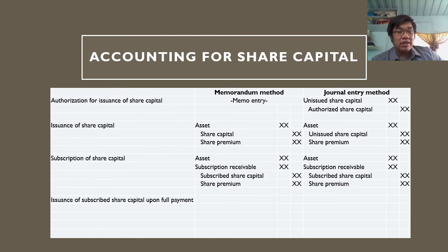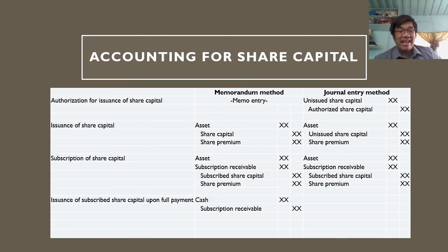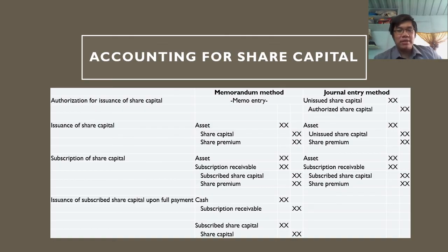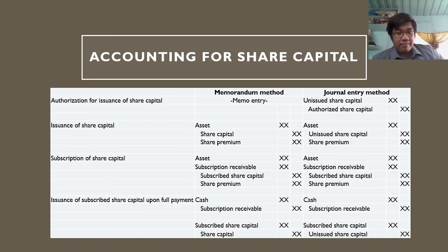The fourth transaction is issuance of subscribed share capital upon full payment. Once the subscriber has paid in full, they are entitled to their share certificates. Under the memorandum method: first record the asset received, credit subscription receivable; then transfer from subscribed share capital to share capital. Under the journal entry method, the first entry is the same, but the last entry differs — since the share certificate is now being issued, unissued share capital is affected.